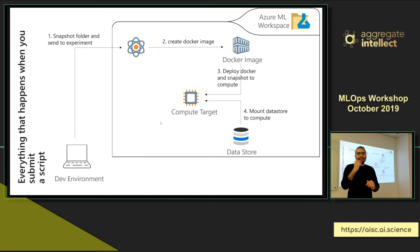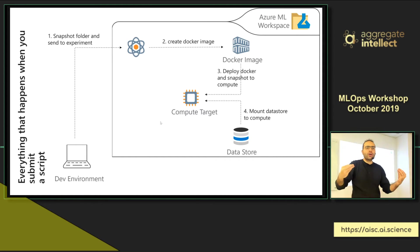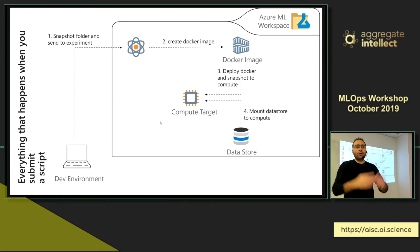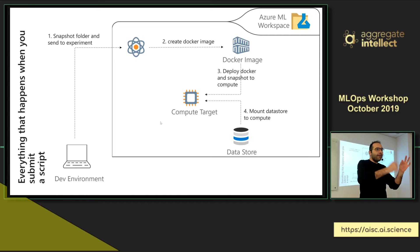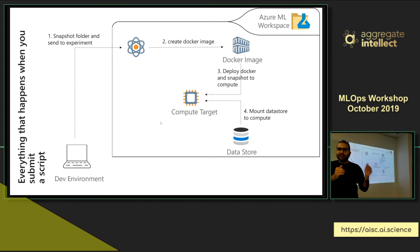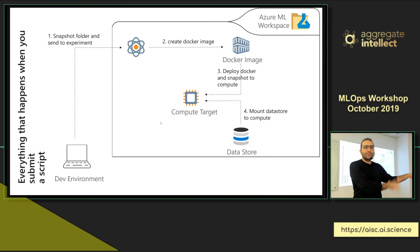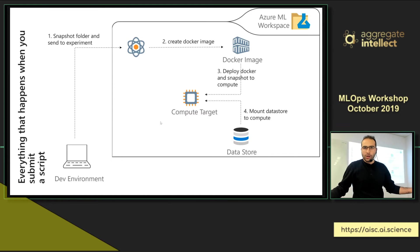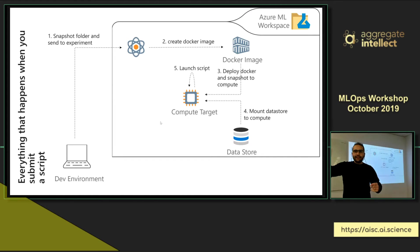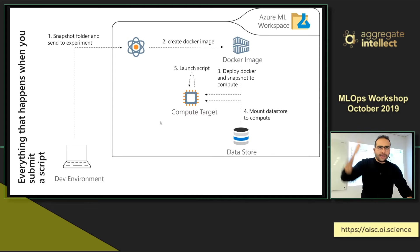When we mount the data store, it gets connected to the compute target at runtime. The efficiency here is significant: imagine you're working on an image problem with terabytes of data. If you load everything to the target compute, the download takes hours. But if you mount it, every batch only fetches the part of the data actually required — not the entire dataset. This significantly improves data ingestion and makes it much more performant in real-world deep learning problems.